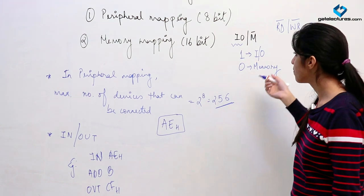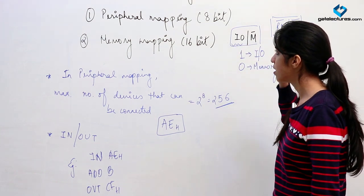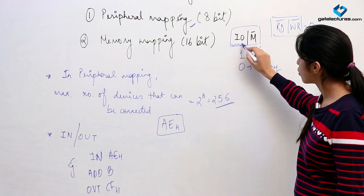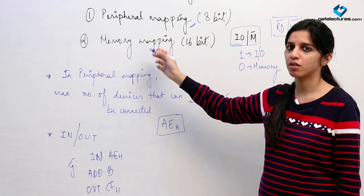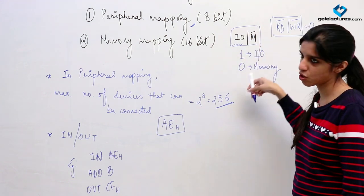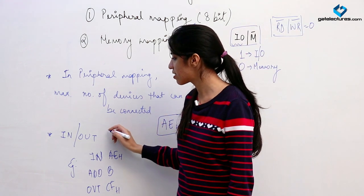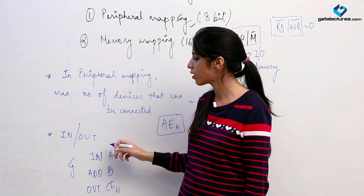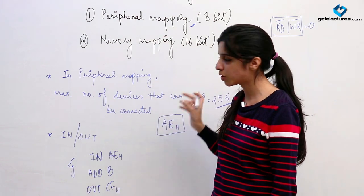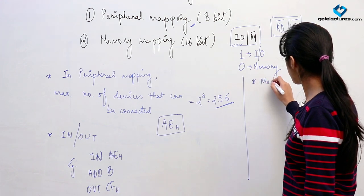Using these pins you can read or write from input-output devices or from memory. In peripheral mapping, we are going to make the IO pin as 1. If we are using memory mapping — that is, if we are allocating the devices as memory locations and giving them 16-bit addresses — then we make this pin 0. We then treat them as memory locations and read/write from them. In that case we cannot use the IN and OUT instructions; those instructions work only for 8-bit addresses.